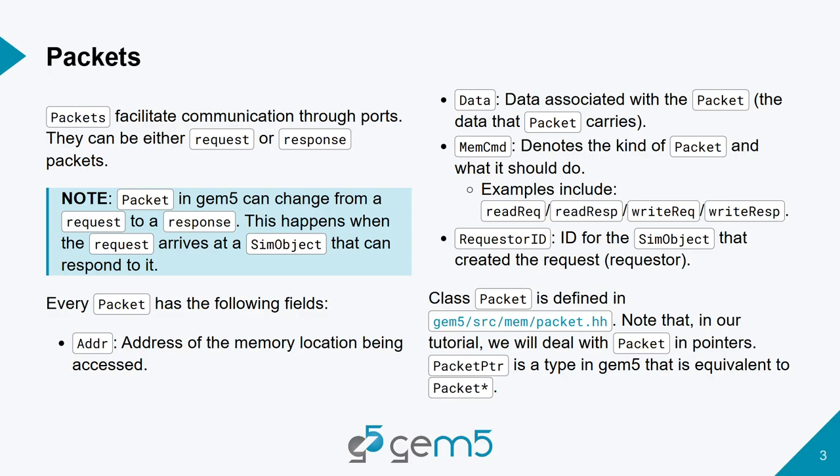Ports and packets work together to move data from one end of your system to another. A packet encapsulates a bunch of information. The things we concern ourselves with are: address — if I want to read an address from memory, I create a packet and set the address field to the address I want to access. There's a data field that may or may not be null depending on what the packet is trying to achieve. And there's a memory command, which can be read request, write request, read response, or write response. There is a long list of memory commands in gem5.